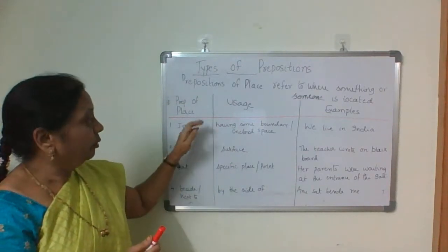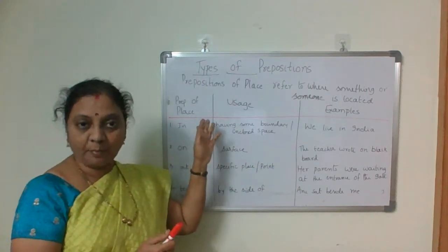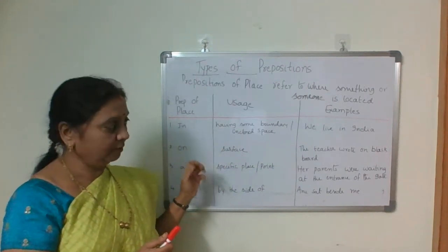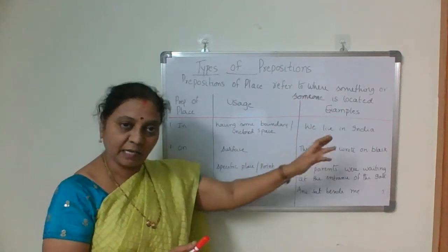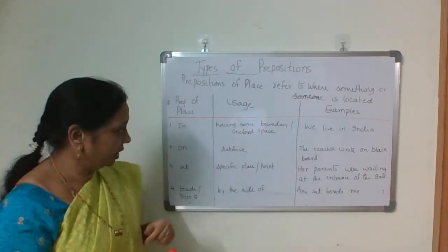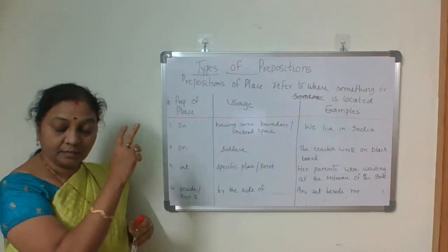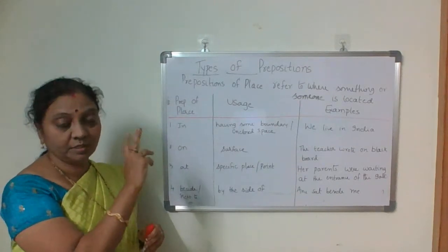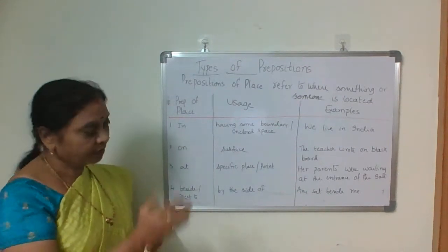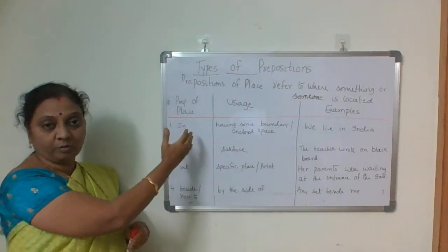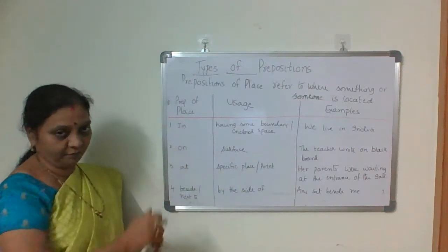What are these prepositions of place, one by one, along with usage and examples? Just like in prepositions of time we used 'in', 'on', 'at', here in prepositions of place also we use 'in', 'on', 'at' first.